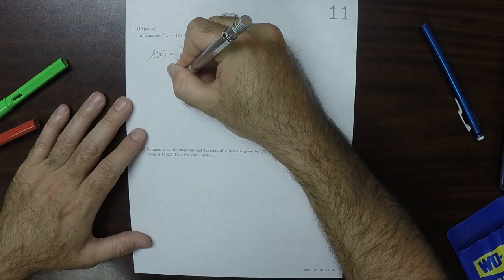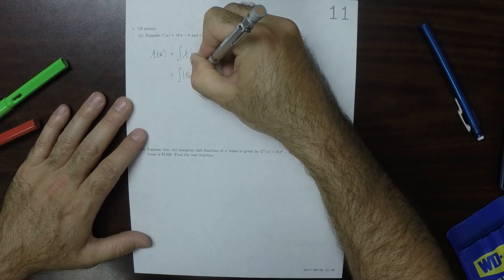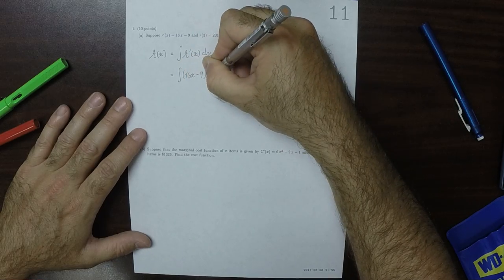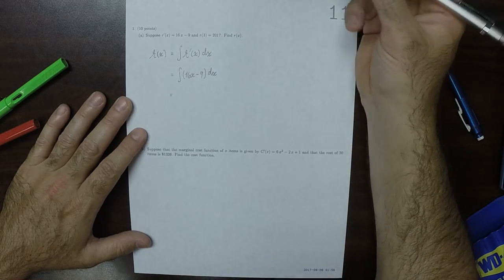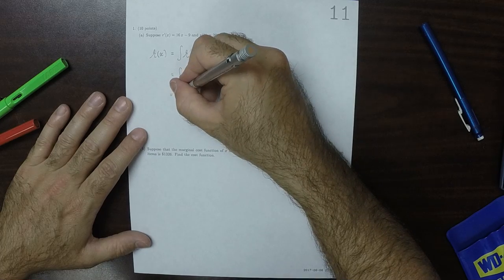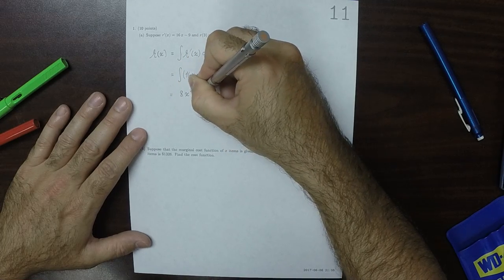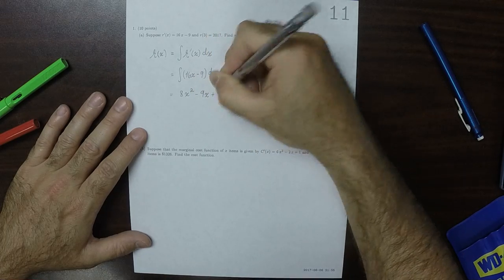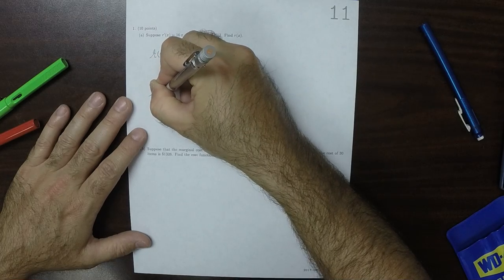So that is the antiderivative of 16x minus 9 dx, which is, the antiderivative of 16x would be 8x squared, and then minus 9x, plus some unknown constant c. So that's r of x.